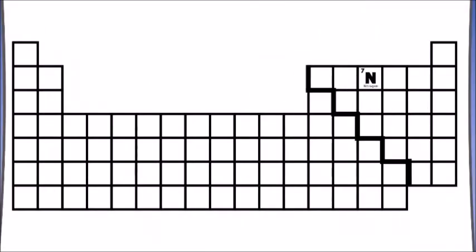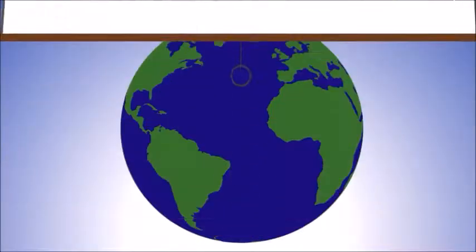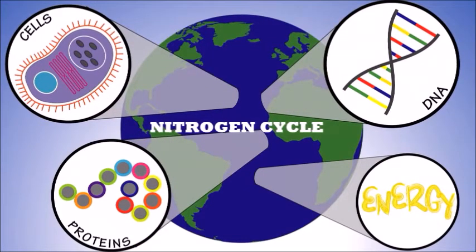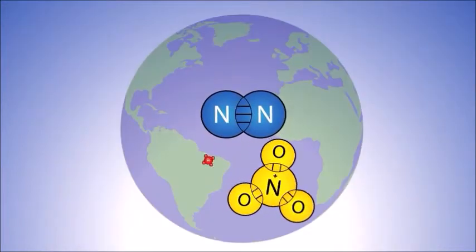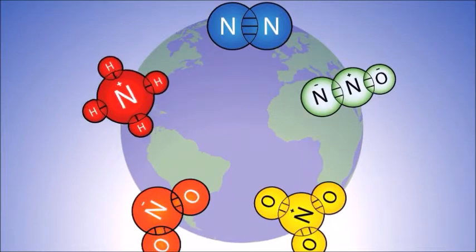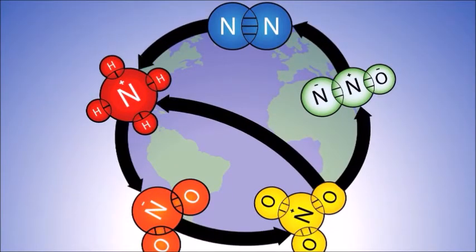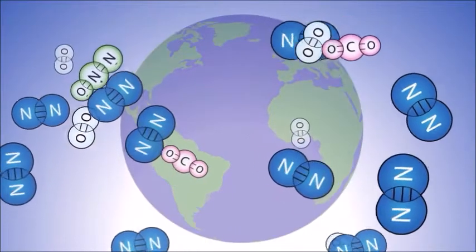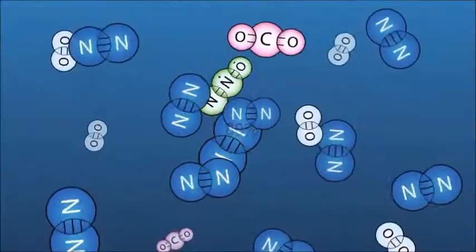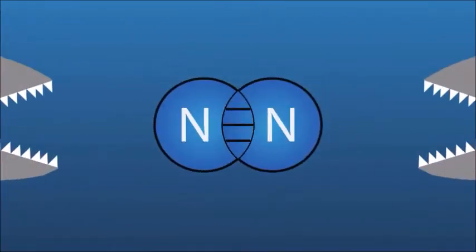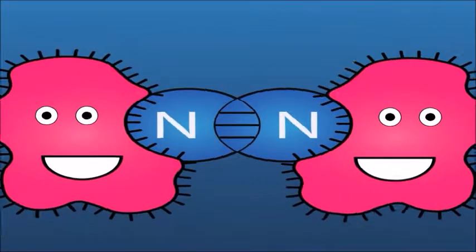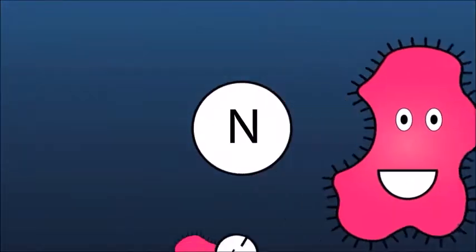Another biogeochemical cycle is about the elements dominating the skies. Nitrogen is an important component of amino acids, which, when chained together, builds up the proteins that make all life on Earth exist. Nitrogen in its molecular state, N2, makes up almost 80% of the world's atmosphere, though it cannot be absorbed directly by plants. Plants generally prefer nitrogen to come in either chemical forms: ammonium or nitrate.